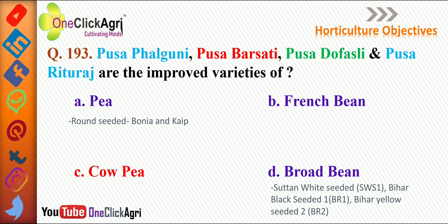In broad beans: Sutton White Seeded (SWS 1), Bihar Black Seeded (Bihar 1), and Bihar Yellow Seeded 2 (Bihar 2) are the varieties of broad beans.